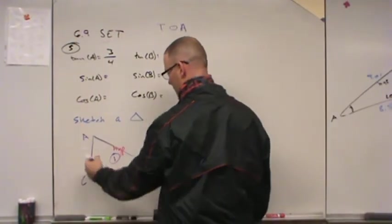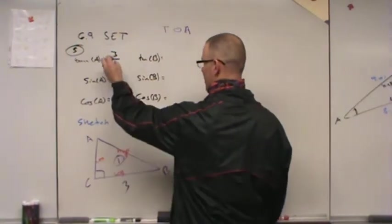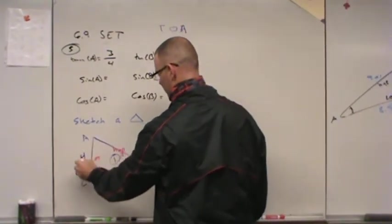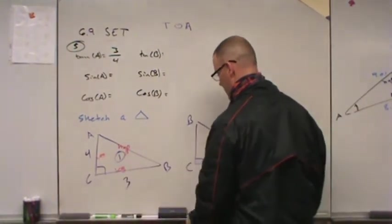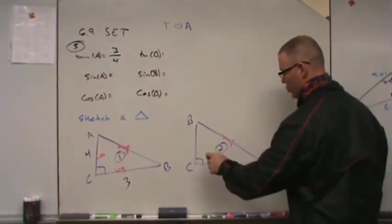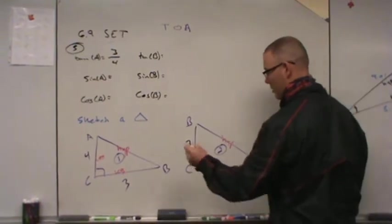So the leg opposite of A becomes 3. The leg adjacent to A becomes 4, so here is my triangle the way I set it up. If you redrew the other one, it would just be this way. They're both correct.